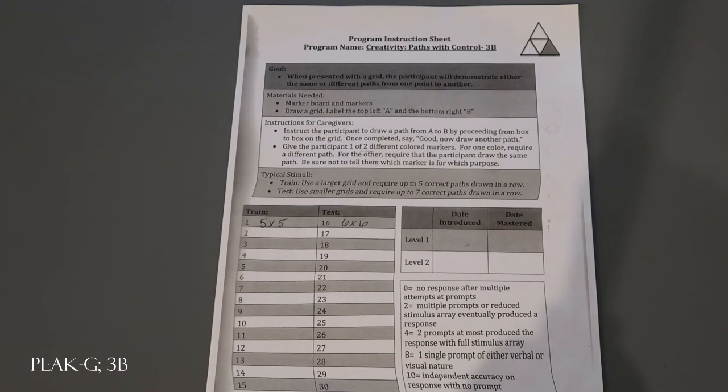So again, that's just kind of a quick material sample. You just really need markers and grid paper for this PEAK Generalization Creativity Path with Control 3B.